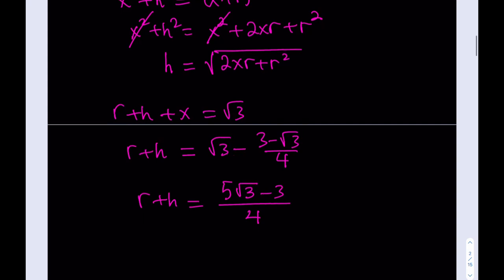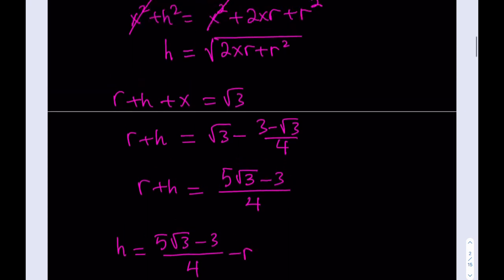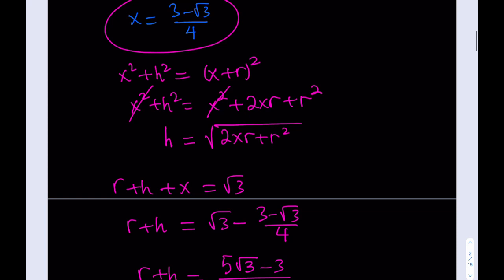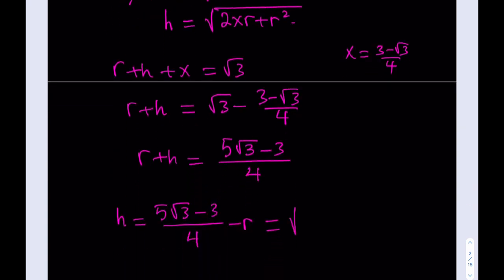H is equal to (5√3 − 3)/4 − R. It's also equal to √(2XR + R²). Plugging in X = (3 − √3)/4, we get 2X = (3 − √3)/2. So we have: (5√3 − 3)/4 − R = √((3 − √3)/2 · R + R²).